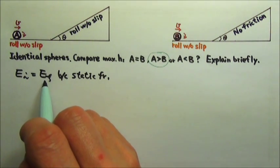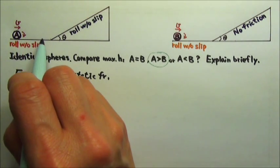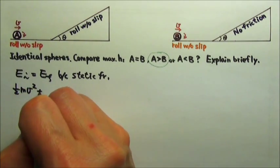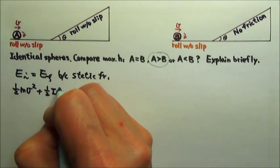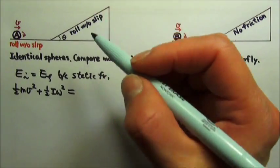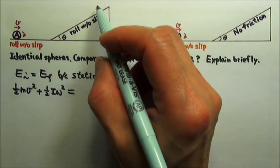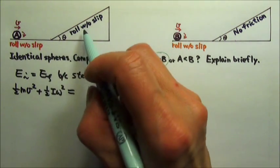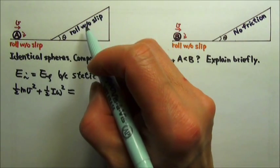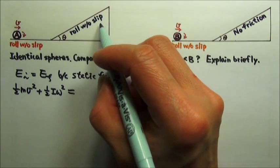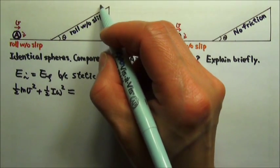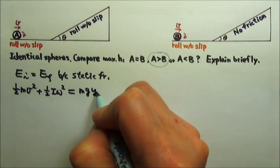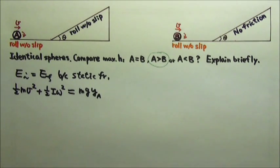So the mechanical energy is conserved. When sphere A is at the bottom of the incline, there is the kinetic energy, the translational kind and the rotational kind. At the maximum height is the turning point for the sphere, so the V becomes zero. And since the sphere is rolling without slipping, that means if V is zero, the omega is also zero. So at the maximum height, there is no kinetic energy. There is only mgy. So this will be the height sphere A reaches.